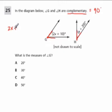2X plus 10, that's angle G, plus X plus 20, that's angle H, gives us 90 degrees.